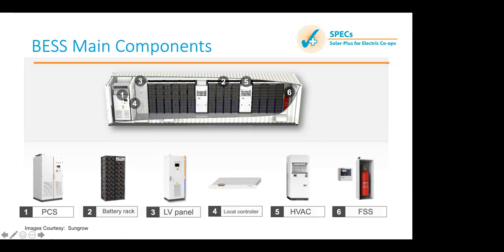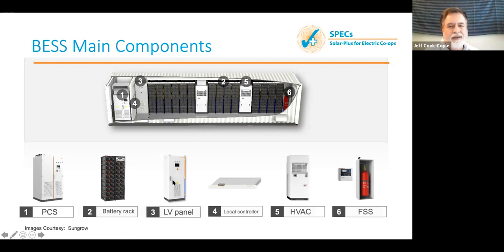At what point does a power wall turn into this? A power wall is a single-phase system — residential is different. A system like this is three-phase and goes down to 50 kilowatts. If it's smaller than 50 kilowatts it will look different — a single integrated thing. But if you're above 50 kilowatts, these are going to be the pieces of it.